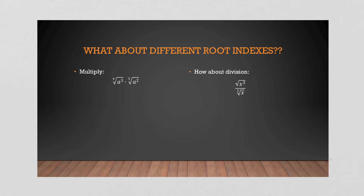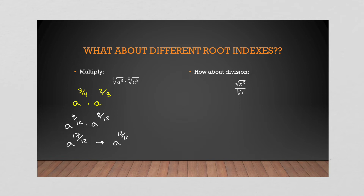Let's do a couple more. Here we have — flower power — this gives me three over four, and this gives me two over three. Again we need a common denominator, which in this case is twelve. We get a to the nine over twelve times a to the eight over twelve, which adds to give us seventeen over twelve. This is easier to simplify by breaking it as twelve over twelve times five over twelve, so you get one a out and then the twelfth root of a to the five.